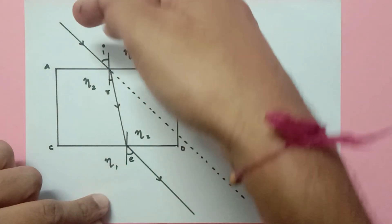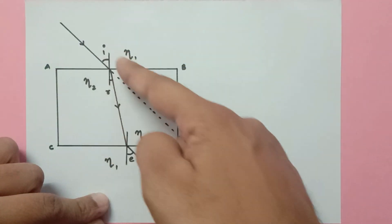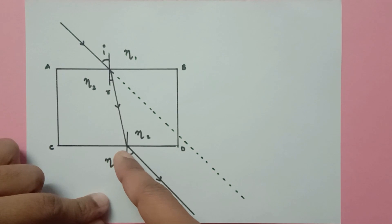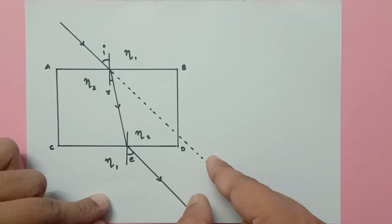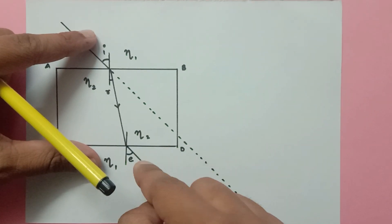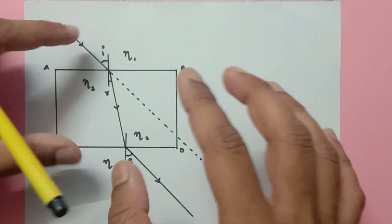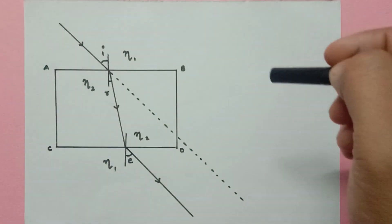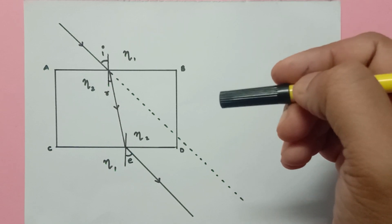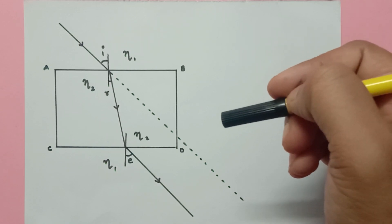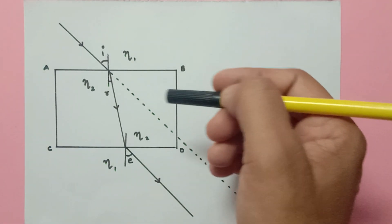Traveling back into the same medium, this is the expected path. The incident ray's expected path and the emergent ray are always parallel to the expected path. The angle of incidence and angle of emergence are always equal. I will now prove why they are equal. For this, you must have an in-depth knowledge of Snell's Law — if you don't, a link is given in the description.